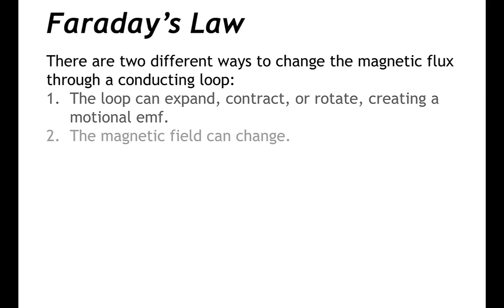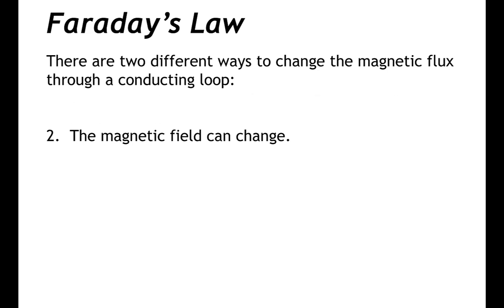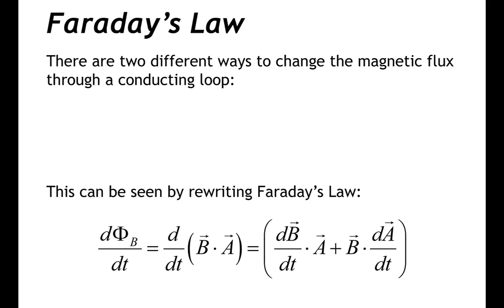Another way to change the magnetic flux is for the magnetic field itself to change. This can be illustrated by rewriting Faraday's law. If magnetic flux is given as the dot product of the magnetic field and the area bounded by the loop — assuming the field is uniform — then the time rate of change of magnetic flux equals the dot product of dB/dt with the area, plus the dot product of B with dA/dt. This is just the product rule applied to the dot product of these two vectors.